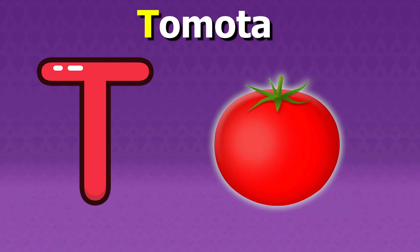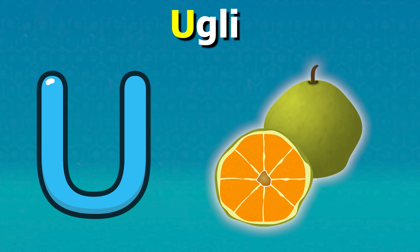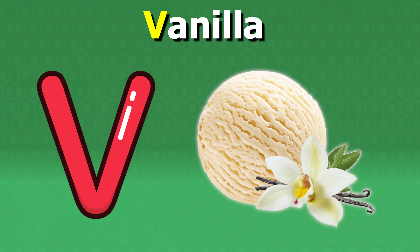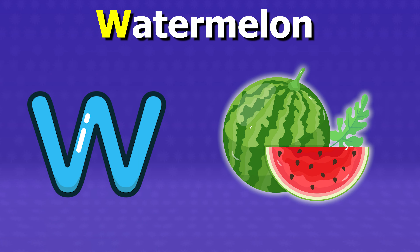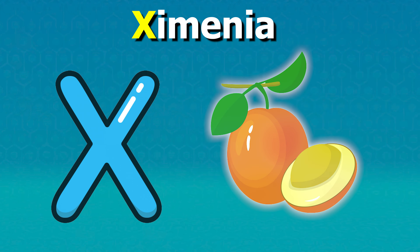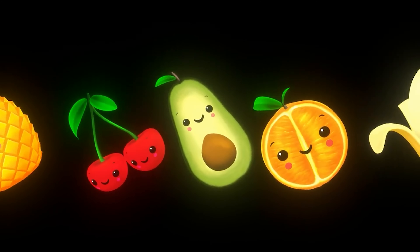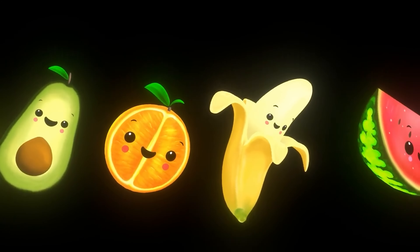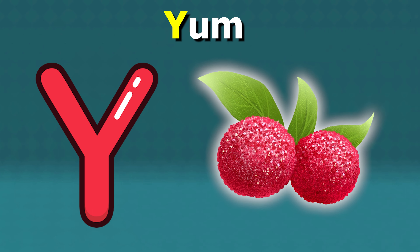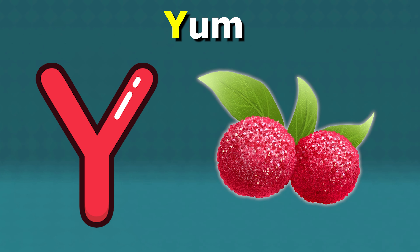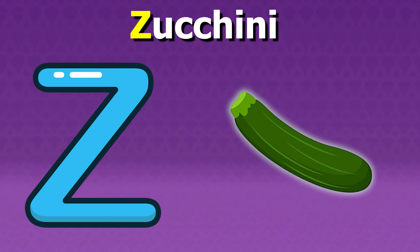S for Strawberries, T for Tomato, U for Ugly Fruit, B for Vanilla, W for Watermelon, X for Zimini, Y for Yum, Z for Zucchini.